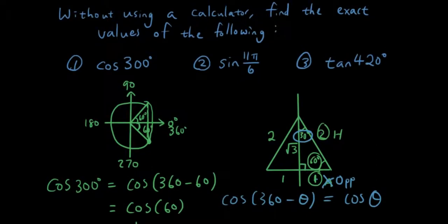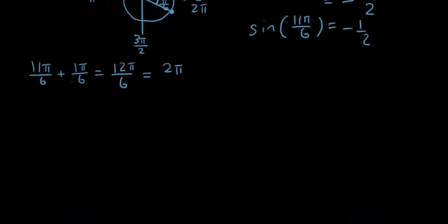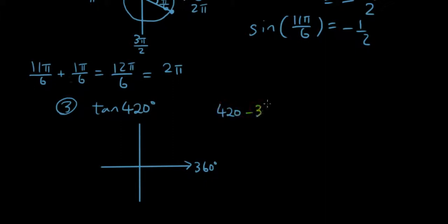Let's do the third one, which is tan 420. So tan 420, so if you draw the Cartesian plane, 360 is over here. Now 420 minus 360 is another 60 degrees. So basically we rotated a full revolution, and then we go another 60 degrees over here. So this angle here is only 60 degrees.